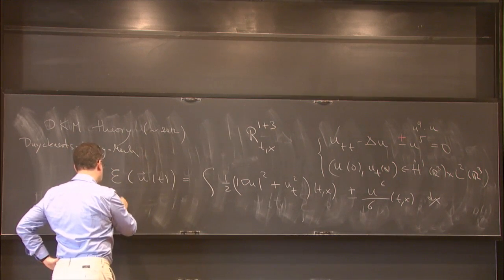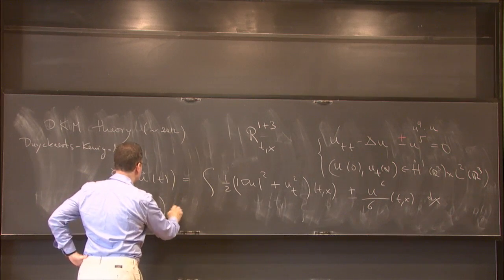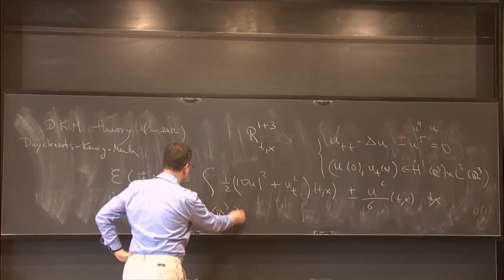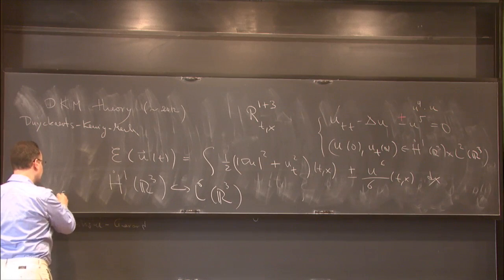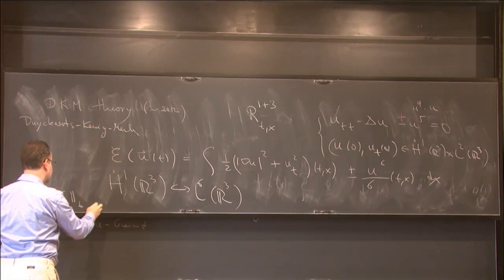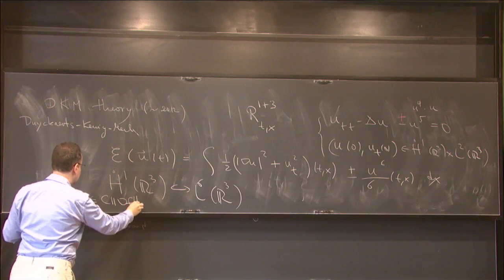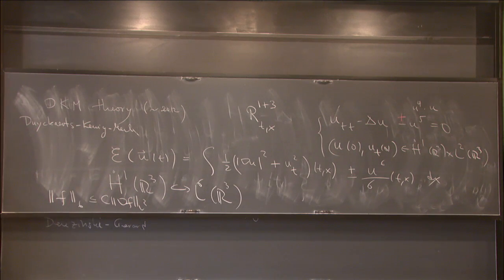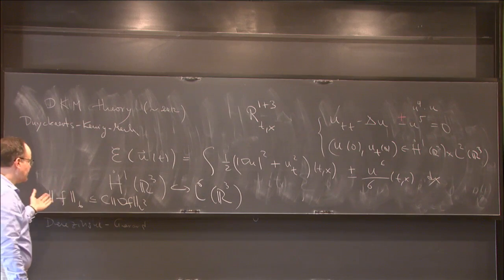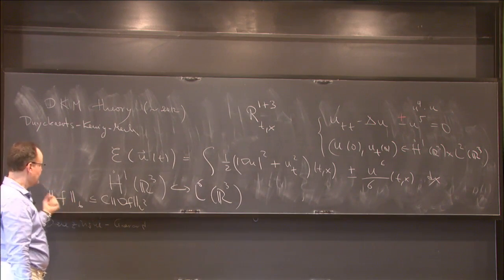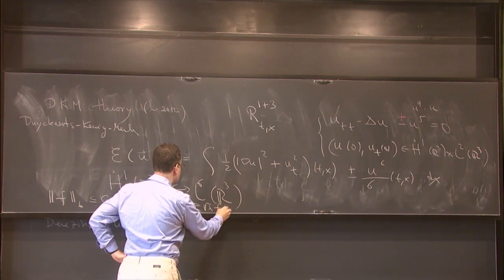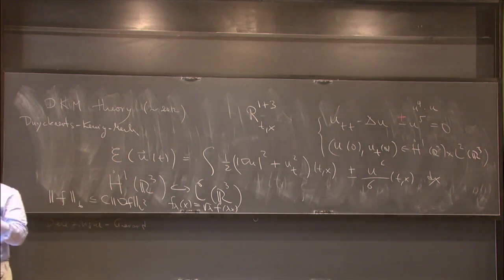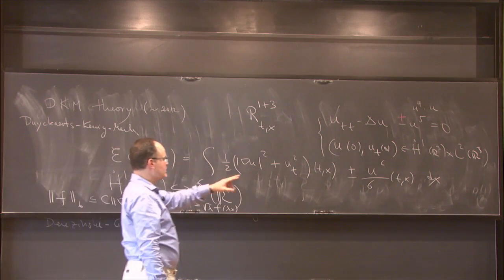Why is this called critical? Because you have the embedding Ḣ¹(ℝ³) ↪ L⁶(ℝ³), meaning ‖f‖_{L⁶} ≲ ‖∇f‖_{L²}. This is a scaling-invariant statement. The natural scaling is f_λ(x) = λ^{1/2} f(λx), which leaves both L⁶ and Ḣ¹ invariant in ℝ³. If you lower the power to u³, the subcritical case is not so well understood for the pure wave equation.